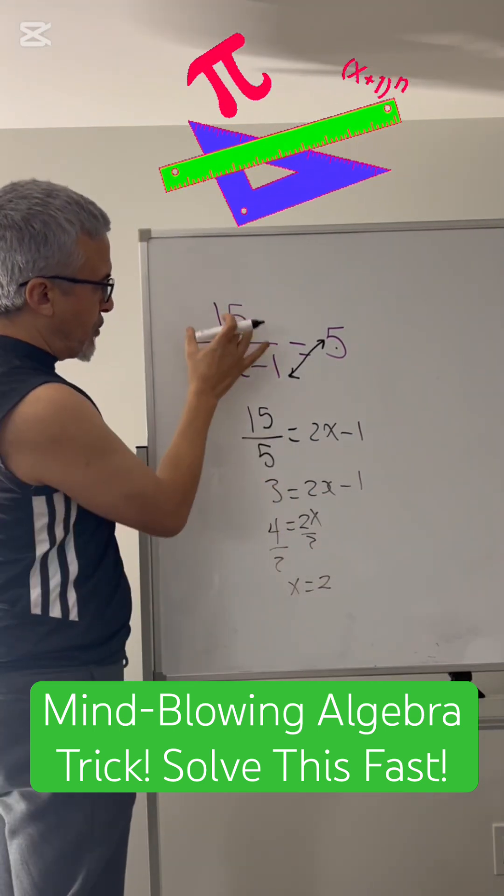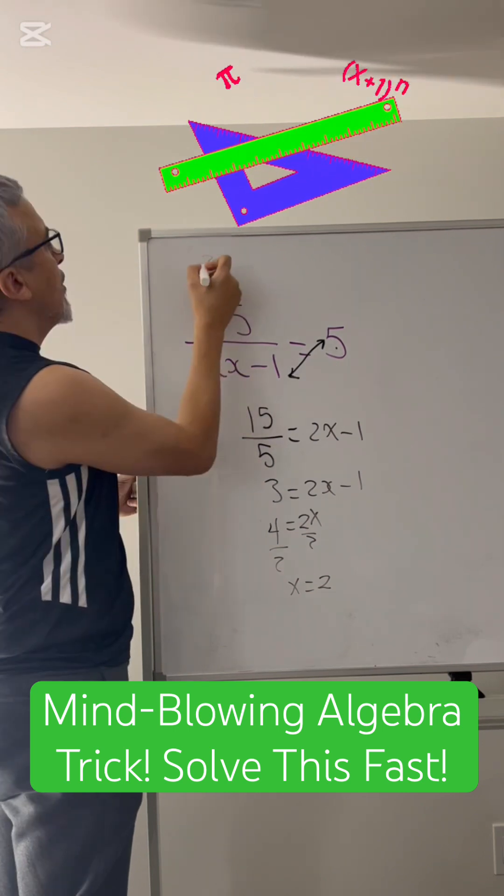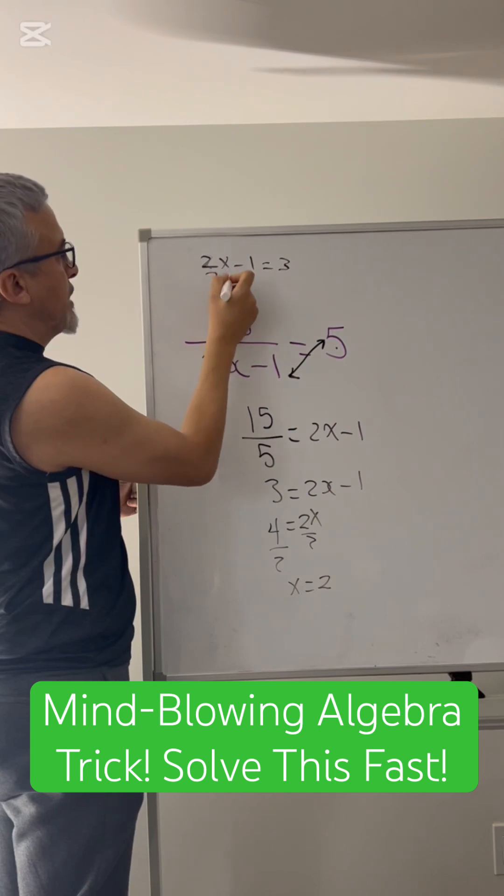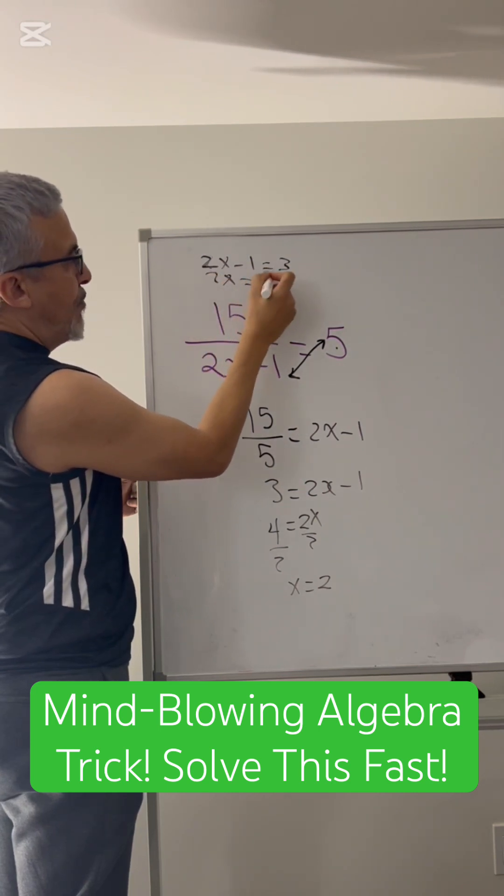The other way is because 15 divided by 3 is 5, 2x minus 1 equals 3. And then 2x equals 4.